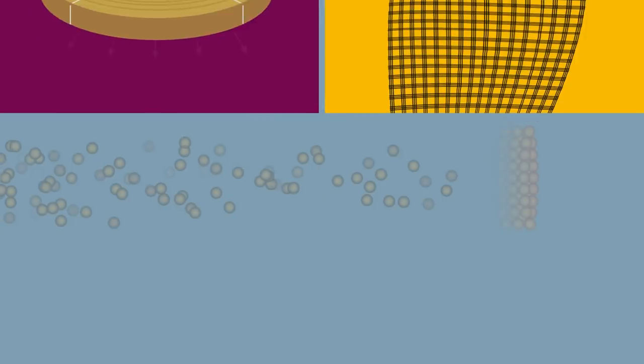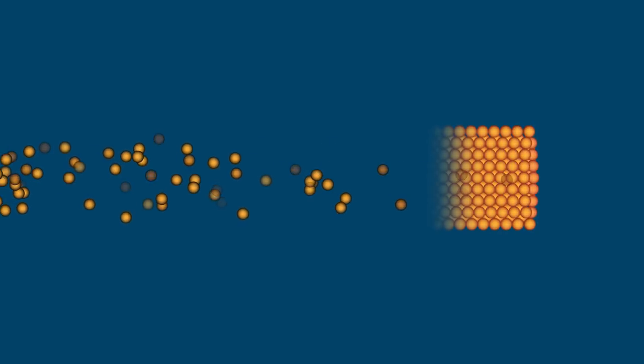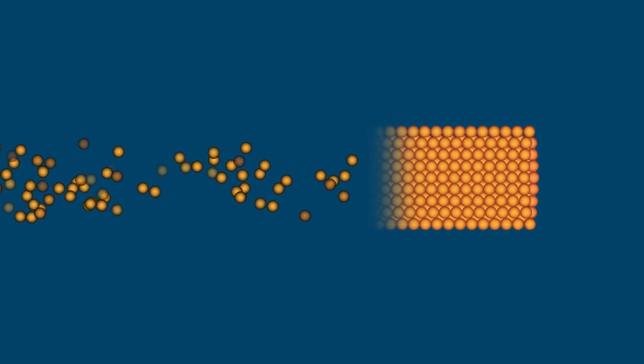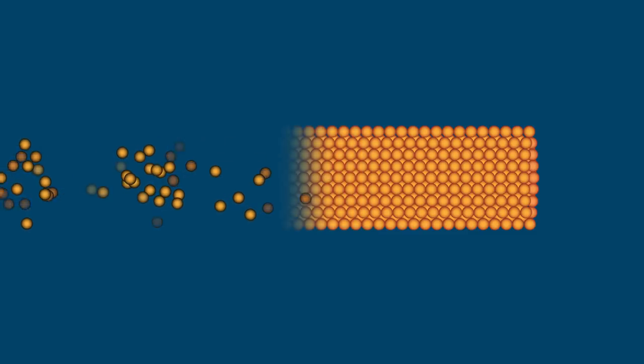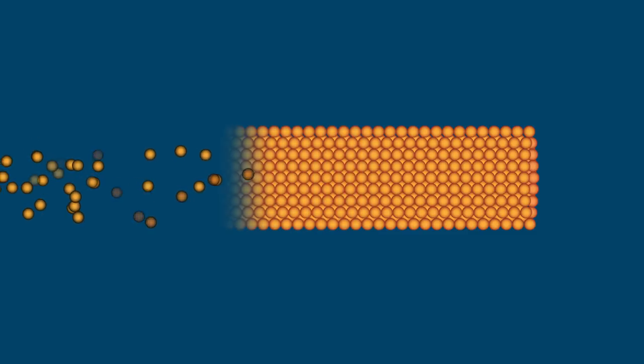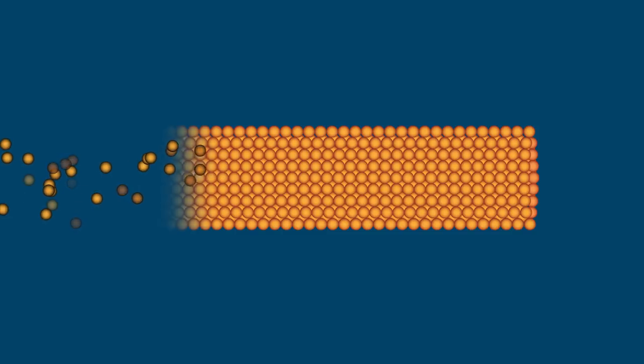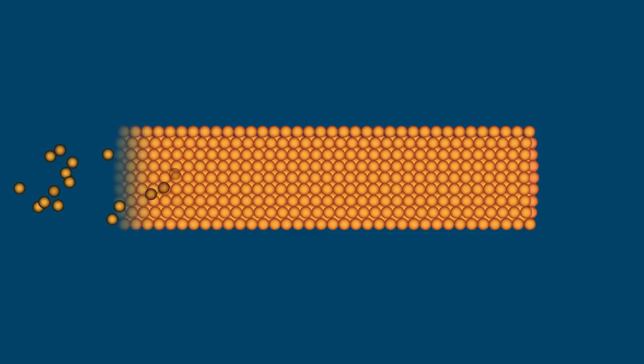And the best part, the materials practically build themselves. Using an assortment of chemical schemes, researchers are coding the macroscopic properties of materials directly into microscopic, self-assembling building blocks like these.